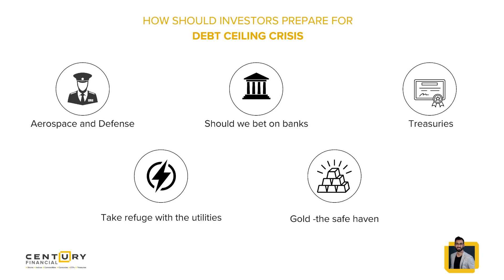Regarding treasuries and bonds: many banks hold significant amounts of US treasuries — the Silicon Valley Bank issue was a prime example, where banks invested deposits in bonds, and when interest rates went up, bond values went down. When depositors withdrew their money, the bank had to sell bonds at a loss to repay them and eventually declared bankruptcy. So banks holding significant US treasury amounts could face a sharp decline in asset values if a default happens, and treasuries as of now may not be the best idea.